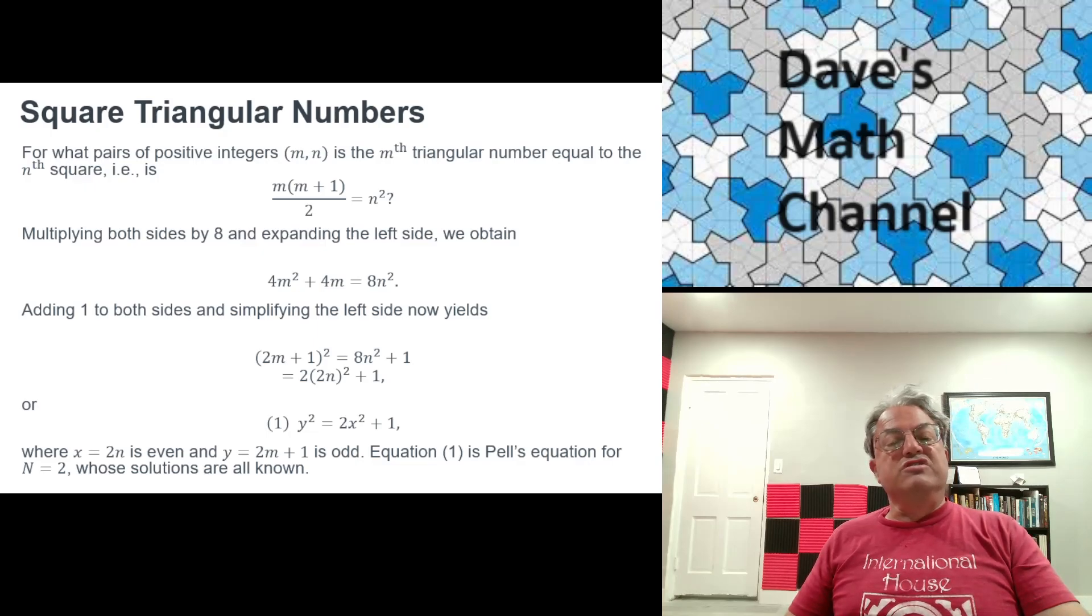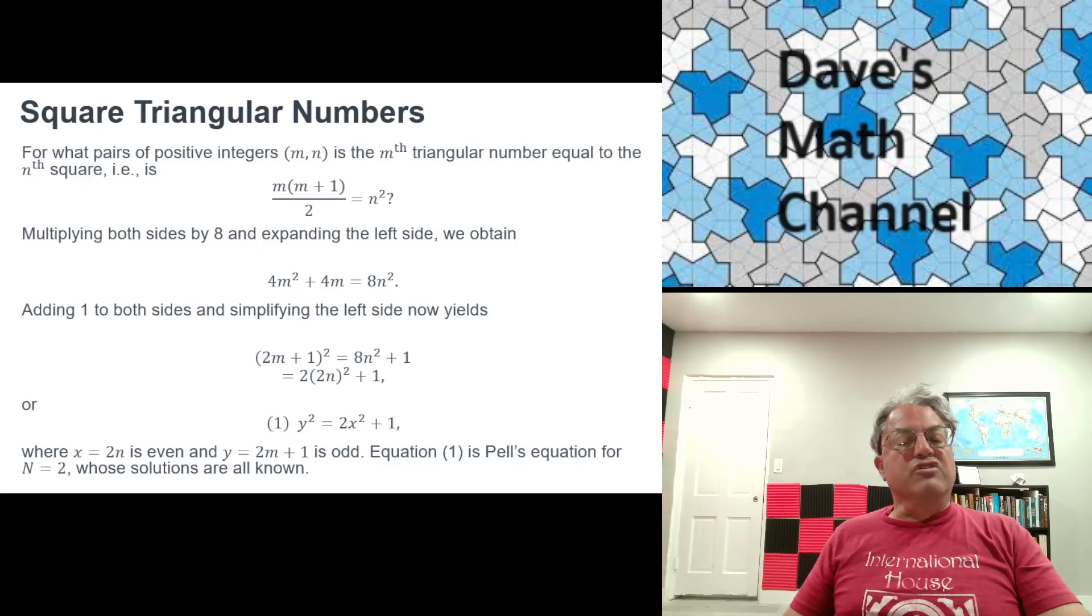So you get 2m plus 1 quantity squared equals 8n squared plus 1, or we can rewrite it as 2 times the quantity 2n squared plus 1. Notice that this is just a special case of a Pell's equation with n equals 2, capital N equals 2. We can write this as y squared equals 2x squared plus 1.